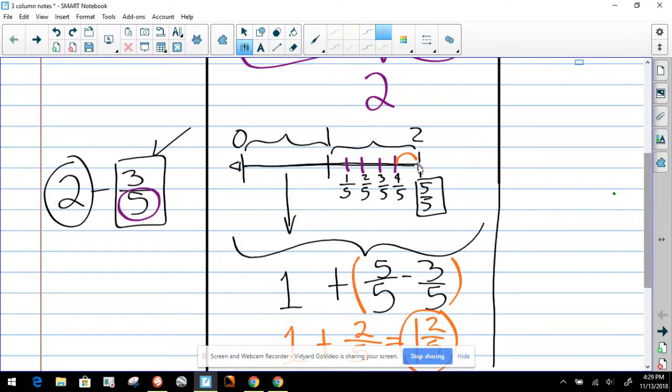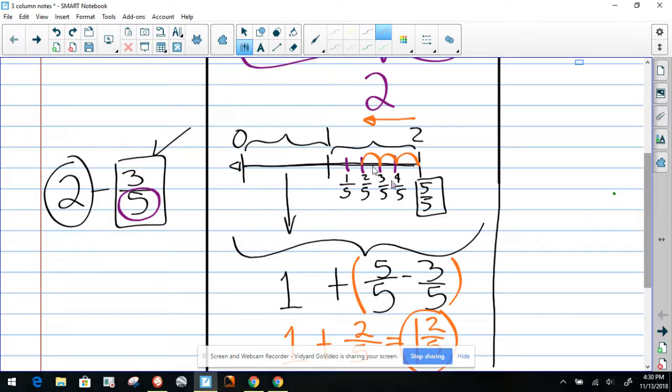So this is 1/5, 2/5, 3/5. And now someone will say, why do we go backwards? Because we're subtracting.